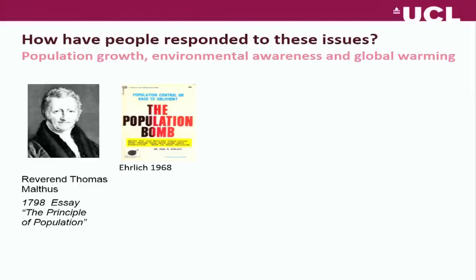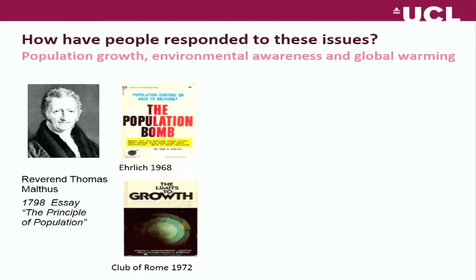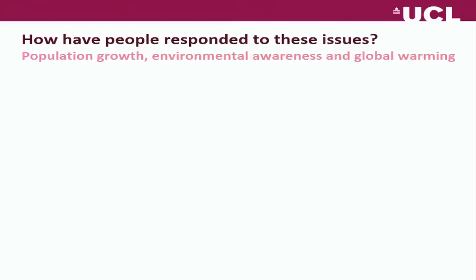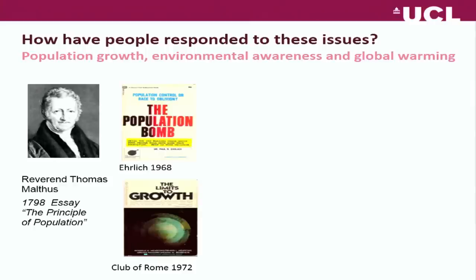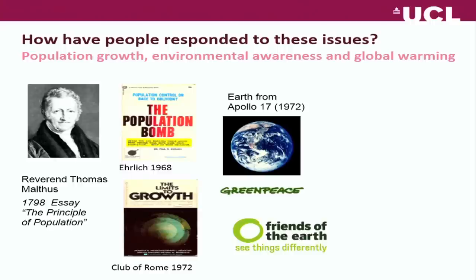Then in the 1960s and 70s, two books had a big impact on environmental awareness and public policy: The Population Bomb by Paul Ehrlich, and Limits to Growth from the Club of Rome think tank. The Population Bomb opened with the stark claim that the battle to feed all of humanity is lost, and hundreds of millions would die of starvation in the 1970s. Limits to Growth was less sensational but also predicted disastrous collapse of environmental systems due to population growth.